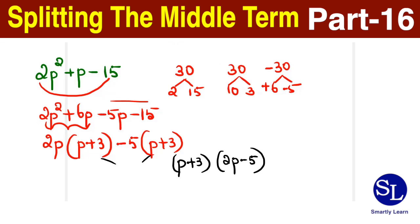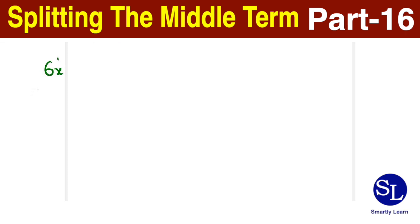Now let's take one more example. 6x squared minus x minus 15. So I have to write a product tree for 15 into 6 which is 90. So 90 can be split as 15 into 6, and 90 can also be split as 9 into 10. 9 into 10 works for us because the difference is 1.